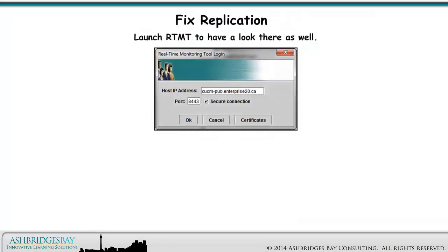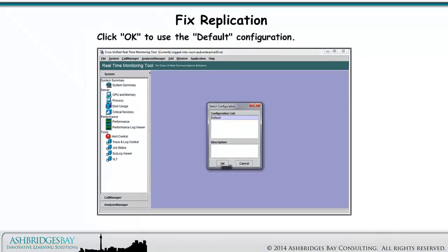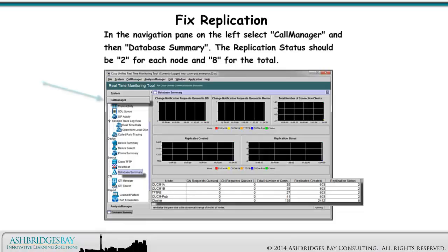Launch RTMT to have a look there as well. Log in using Collab Admin and your password. Click OK to use the default configuration. In the Navigation pane on the left, select Call Manager and then Database Summary. The replication status should be 2 for each node and 8 for the total.